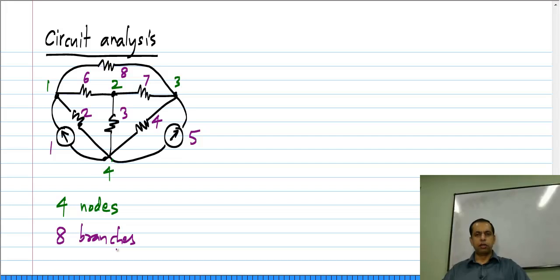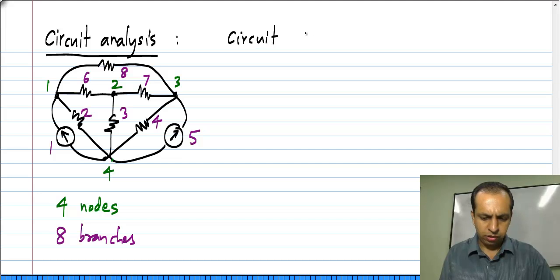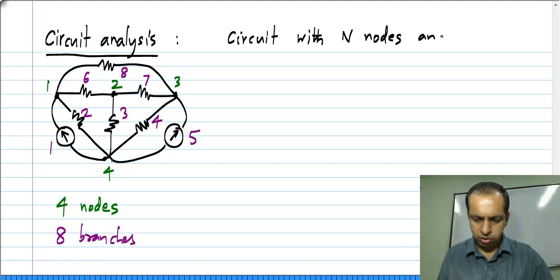So in general when we have a circuit, we will have a certain number of nodes and a certain number of branches. So in general we could have a circuit with N nodes and B branches.